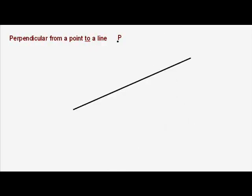The next construction sounds very similar, but it's not quite the same. It's a perpendicular from a point to a line. This time, the point P is not on the line, it's away from it. How do we draw a line which comes down and hits this line at right angles?